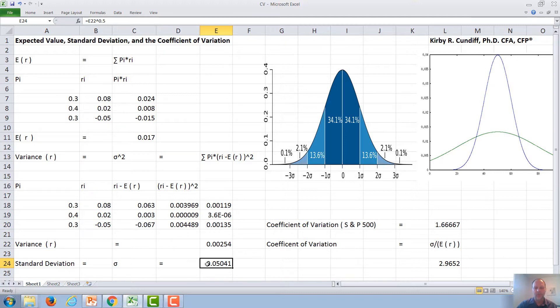The final number we want, the coefficient of variation, is, again, the standard deviation divided by the expected value, which in this case is 2.9652.